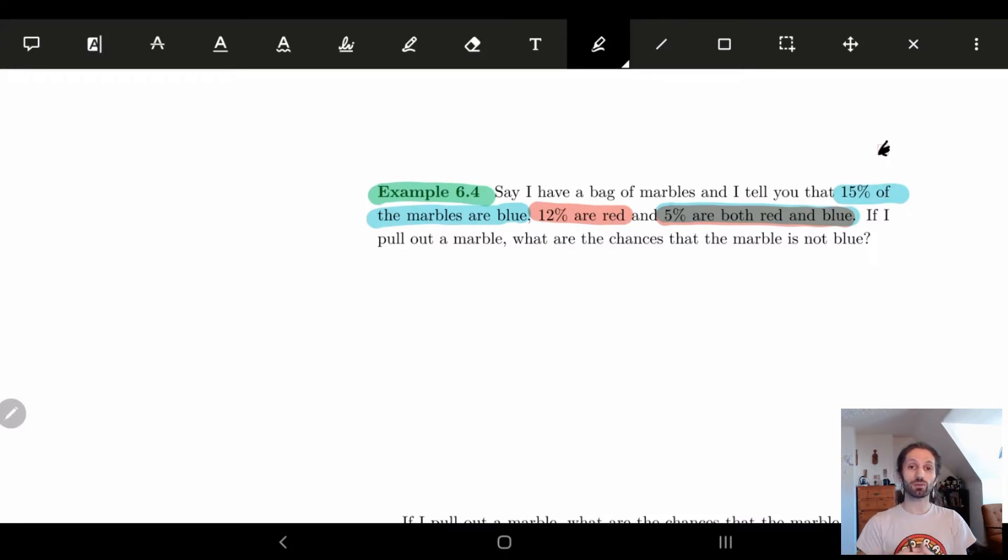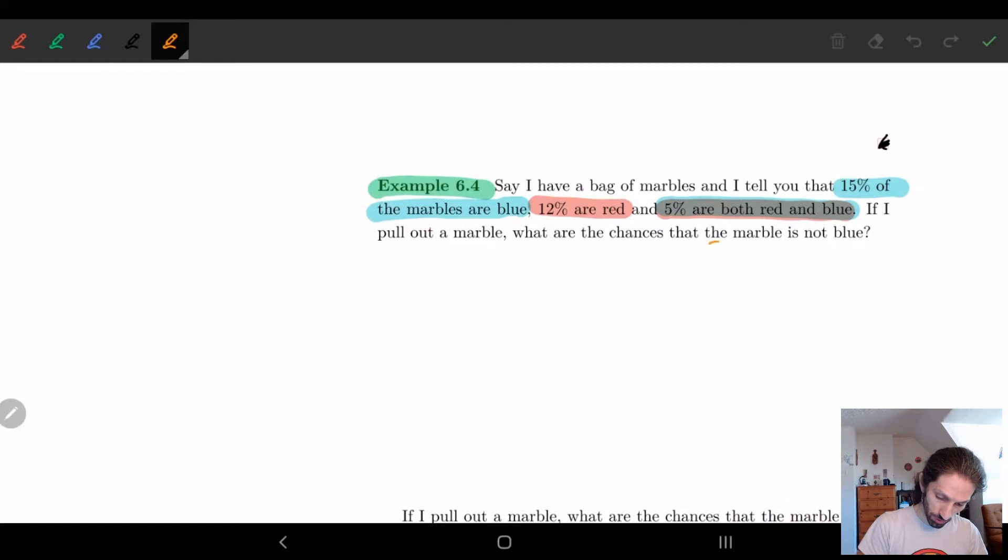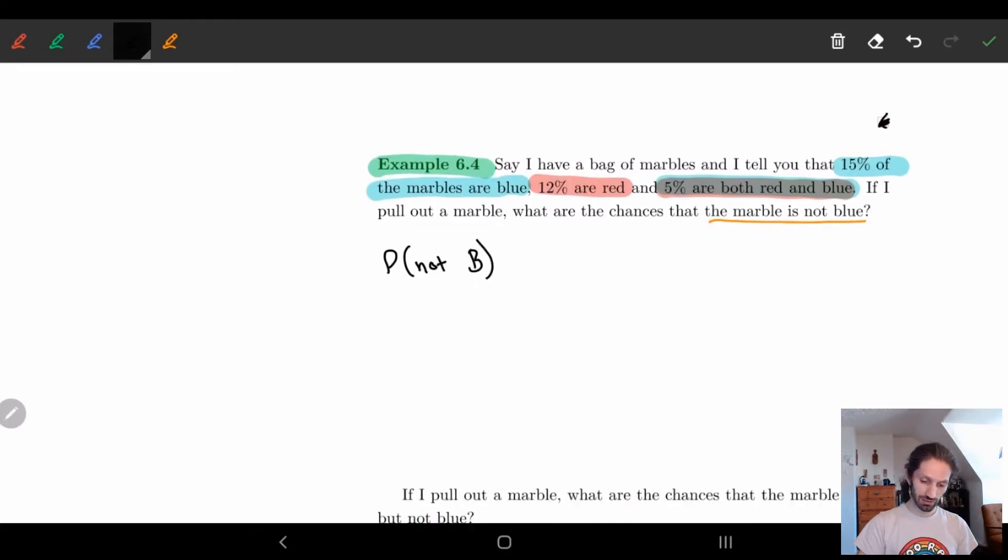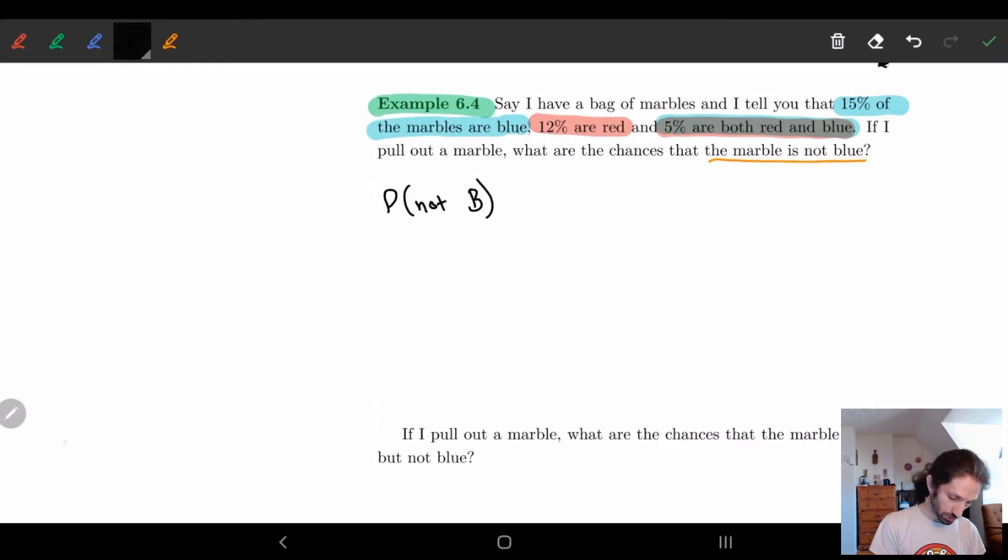And now the question is, if I pull out a marble what are the chances that the marble is not blue? So let us first start off at the very beginning of what are we asking. What we're asking is the marble is not blue. That is our event. So in other words we're asking the probability of not blue. We'll do B for blue. And then here what I'm going to do is write these other probabilities, these percentages on the side. So we know that the probability of blue is 0.15. We know the probability of red is 0.12. And we know the probability of blue and red is equal to 0.05.